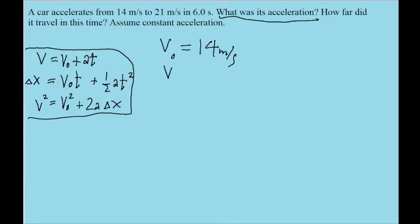The velocity it ends up at, which I'll just use v, is 21 meters per second. And the time it takes, the time interval that all this happens over, is 6.0 seconds. So those are the three variables we're given, and we want acceleration.